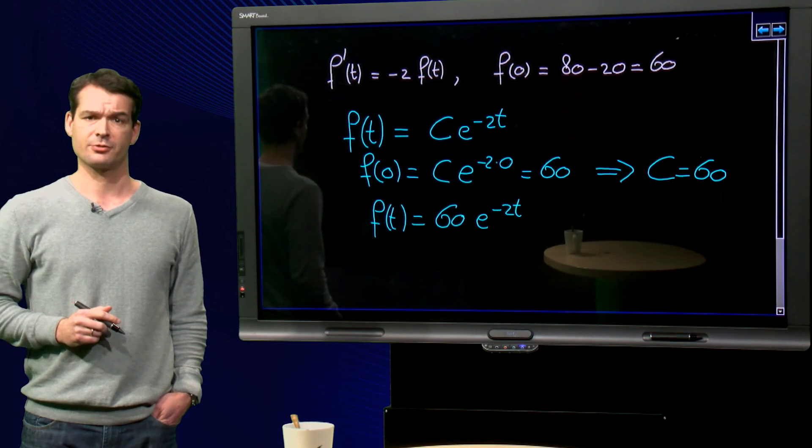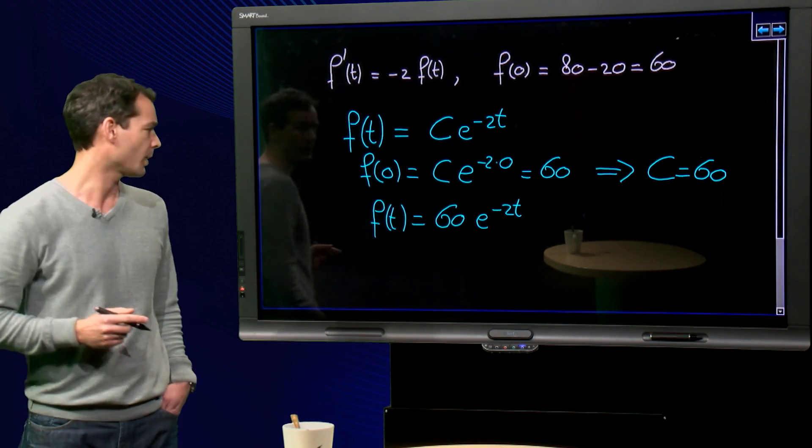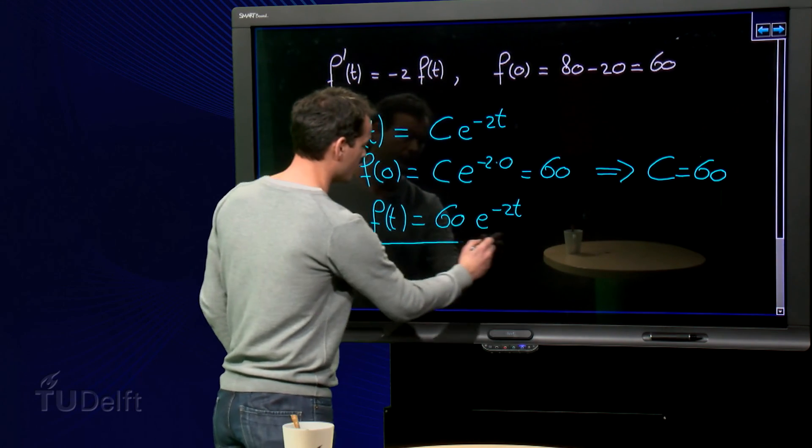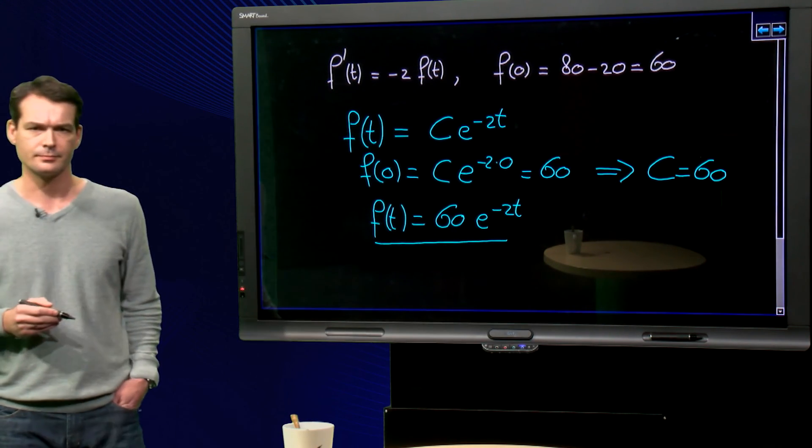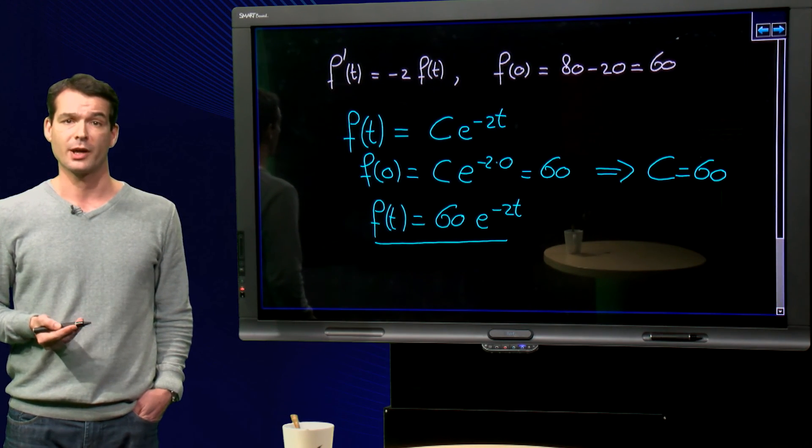OK, so the function f describing the difference between the temperature of the coffee and the room is given by this function we have here. So we found the function that we wanted by solving the differential equation.